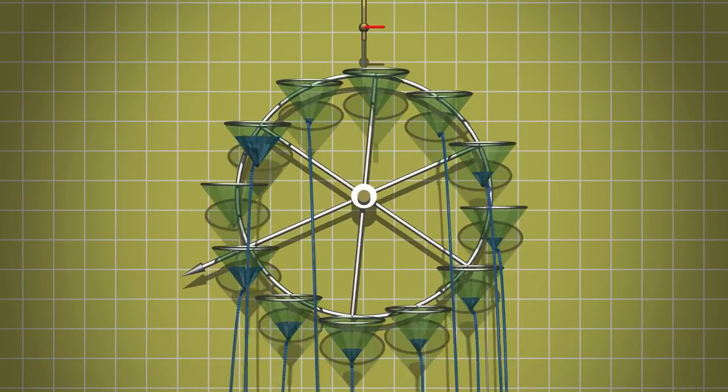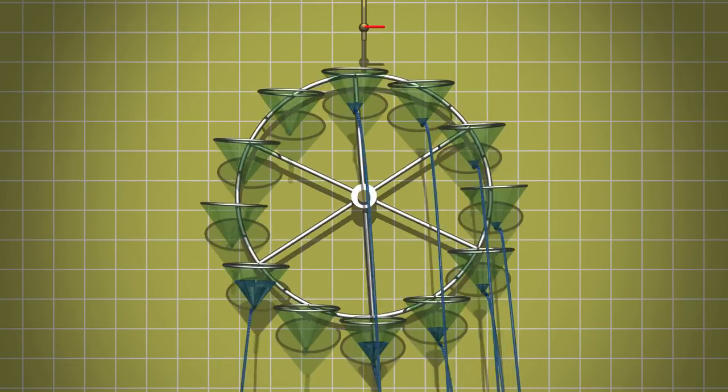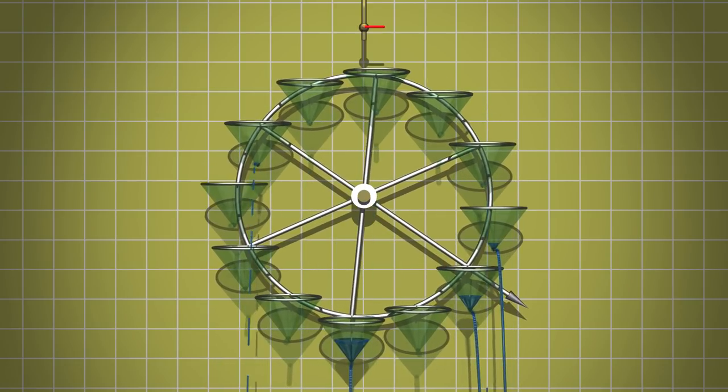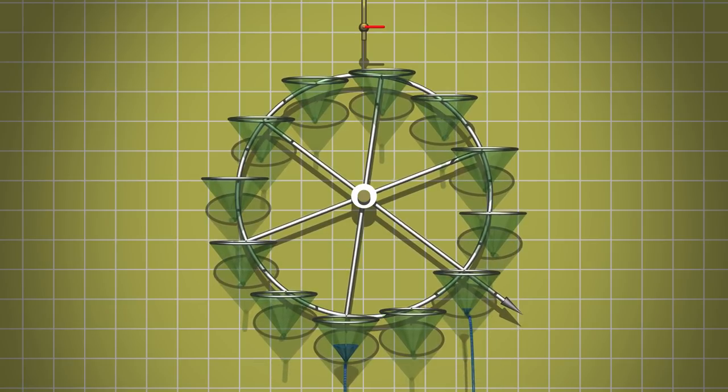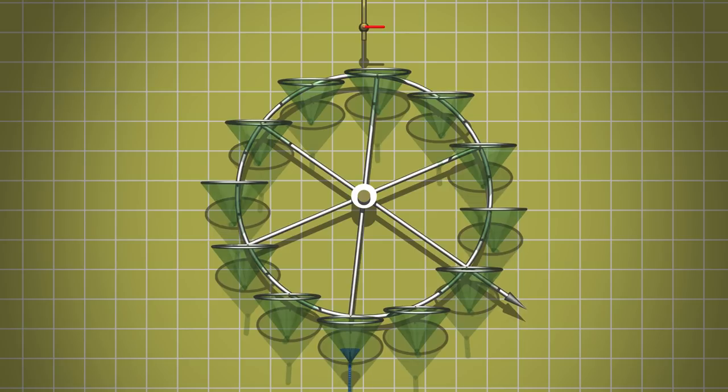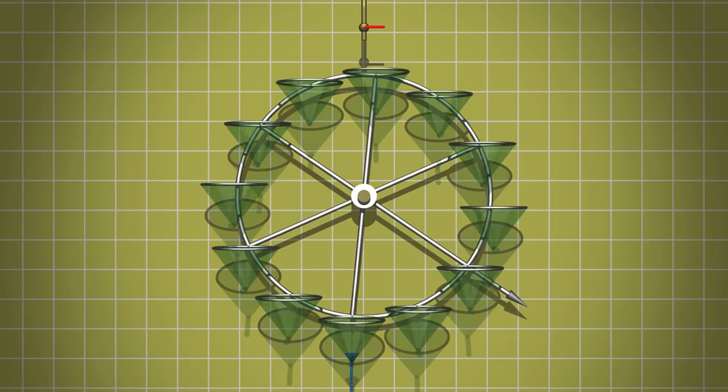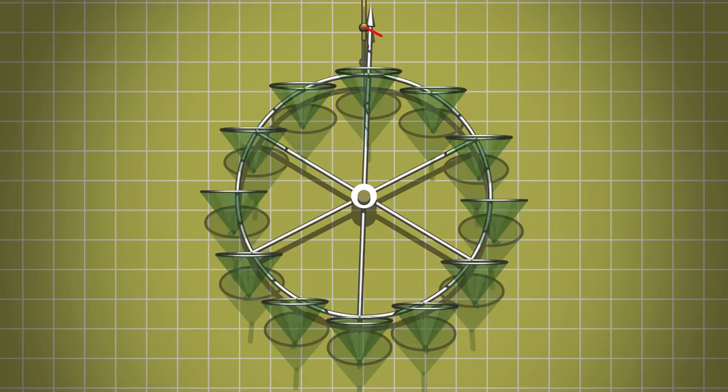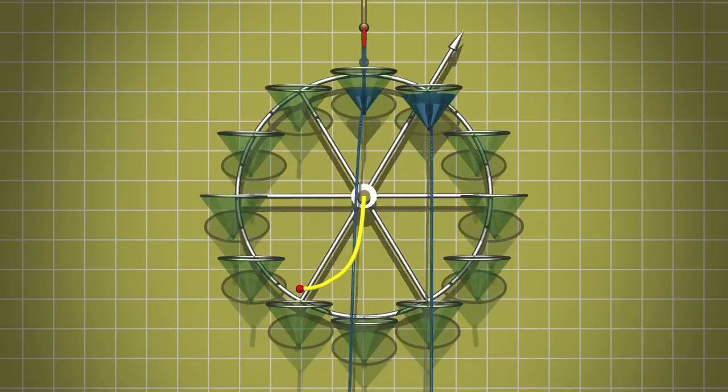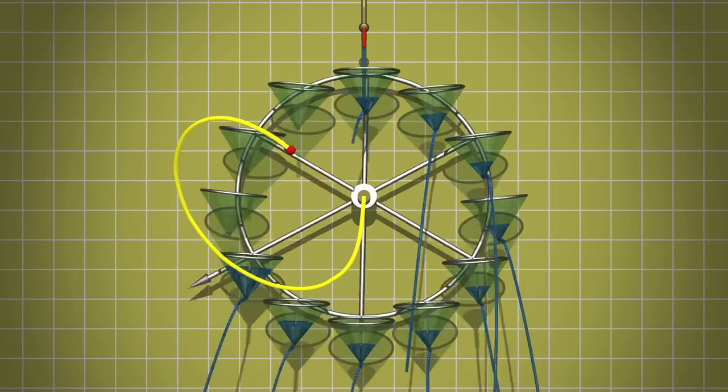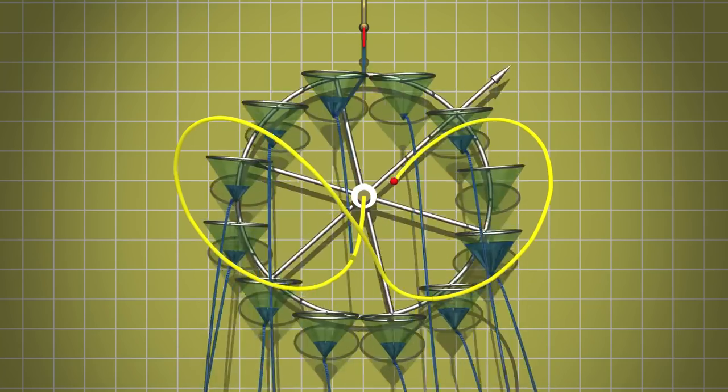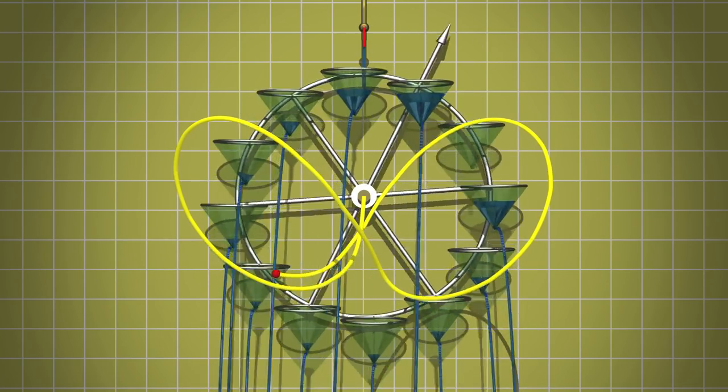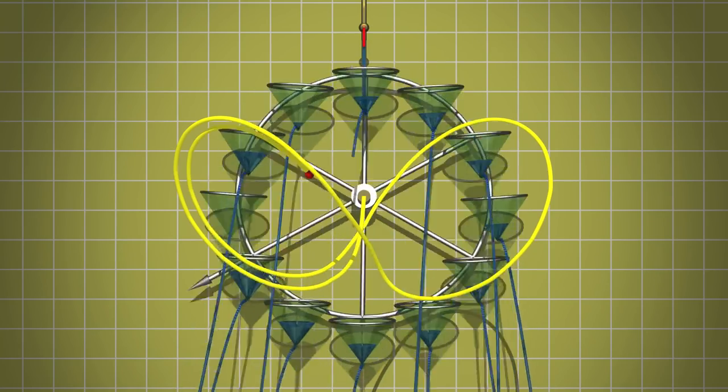In fact, there is a relationship between the mill and the Lorenz attractor. Let's choose three numbers to describe the mill. For instance, the angular velocity and the two coordinates of its center of gravity. The evolution of these numbers traces out a yellow curve in three space. Is it not incredible? Our mill moves like a butterfly.